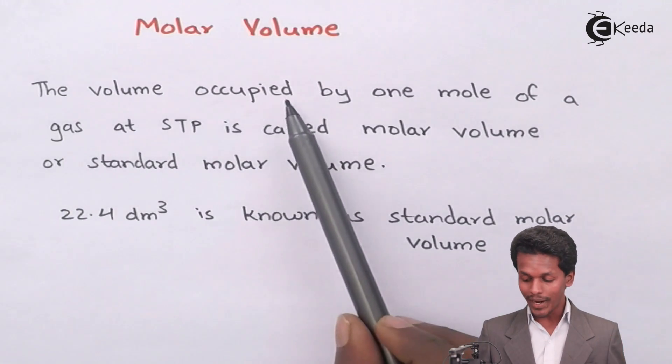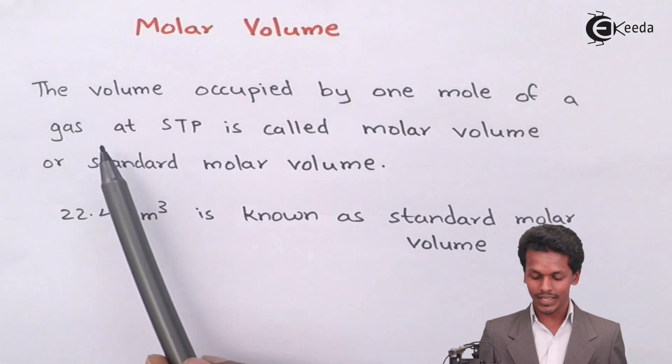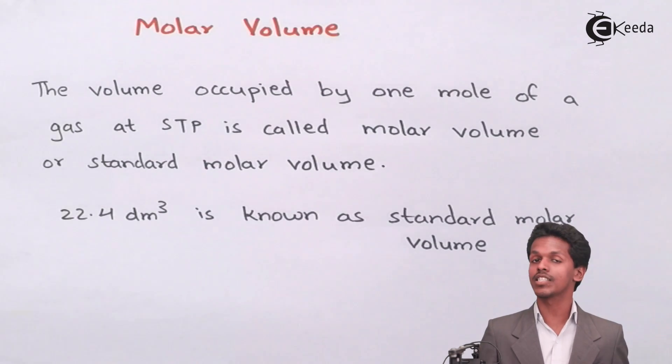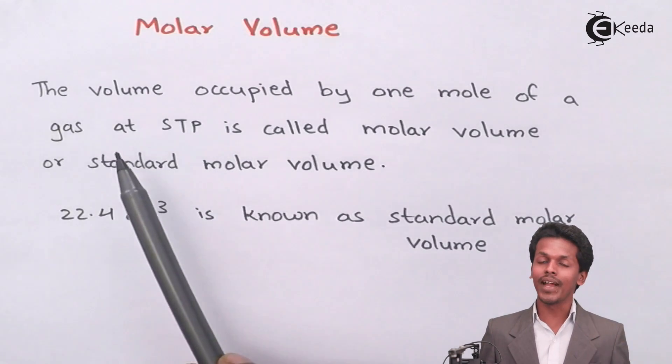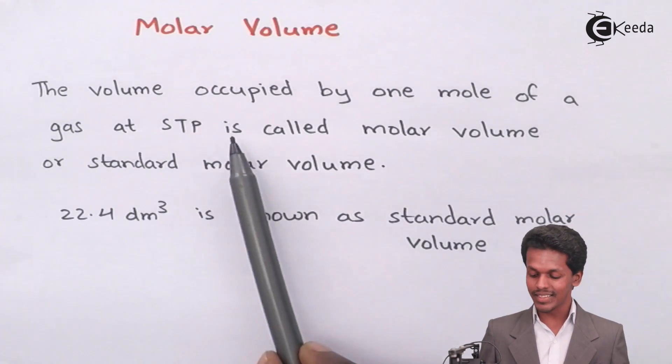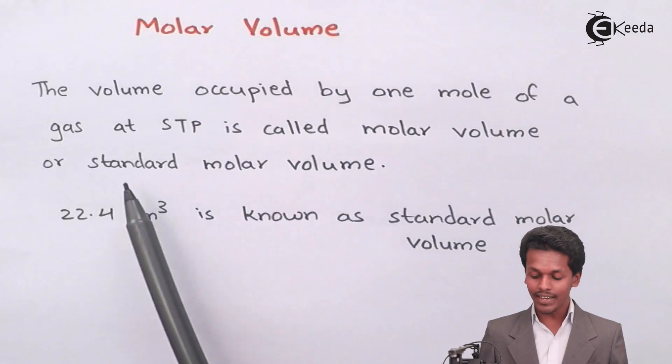Therefore, the volume occupied by one mole of a gaseous substance at STP. In this case, STP is nothing but standard temperature and pressure. And this volume that is occupied by gas at STP is known as molar volume or standard molar volume.